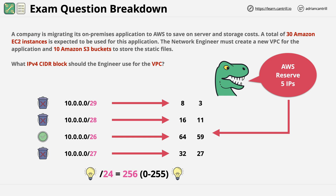The structure of this question is a Goldilocks question — evaluate the text, review what each answer offers, and quickly reach a conclusion. This is another question where the ability to perform basic subnet math, specifically binary to decimal conversion, is a real advantage in the exam. If you're doing the Advanced Networking Specialty Exam, you need to be able to perform this type of calculation without any calculator — this is basic binary to decimal mathematics.